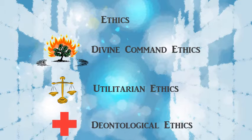The third ethical system is deontological ethics. The famous figure here is Immanuel Kant (K-A-N-T). Kant objected to utilitarian ethics, arguing that we have a duty to treat people not as means, but as ends in and of themselves. In other words, it's wrong to use people for other ends — people should be an end in themselves.